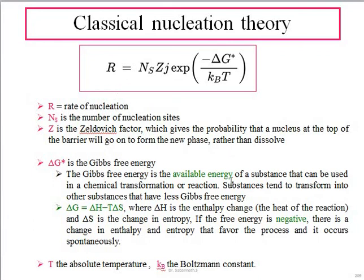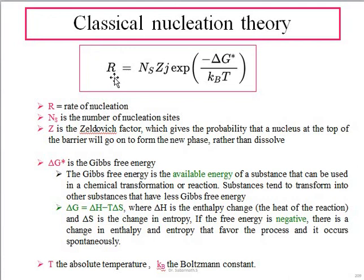For the exam, keep this equation in mind: R = Ns · Z · J · exp(−ΔG* / kB·T). Here, R is the rate of nucleation — the output we calculate for any nucleation process happening in a particular fluid. Ns is the number of nucleation sites. kB is the Boltzmann constant, T is the absolute temperature, and Z is the Zeldovich factor, which gives the probability that a nucleus at the top of the energy barrier will go on to form a new phase.